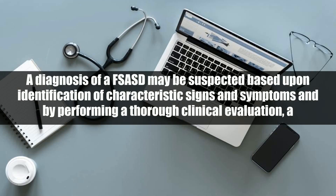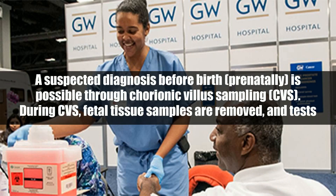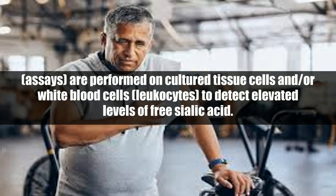A diagnosis of FSASD may be suspected based upon identification of characteristic signs and symptoms and by performing a thorough clinical evaluation, including a detailed patient history, family history, and specialized tests that detect elevated levels of free sialic acid in certain cells, tissues, or in urine. A suspected diagnosis before birth, prenatally, is possible through chorionic villus sampling (CVS), during which fetal tissue samples are removed and assays are performed on cultured tissue cells and/or white blood cells (leukocytes) to detect elevated levels of free sialic acid.